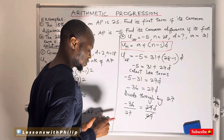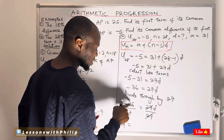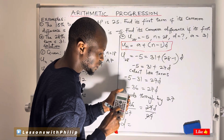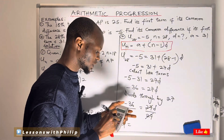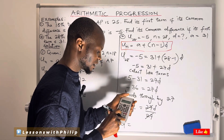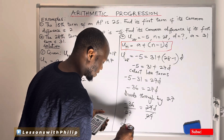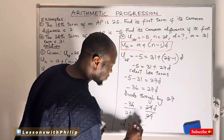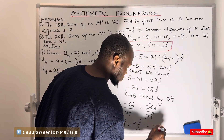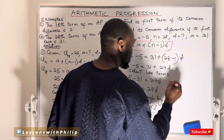The 27s cancel, leaving d alone. My common difference is −36 divided by 27. Simplifying: 3 goes into 36 to give 12, and 3 goes into 27 to give 9. Then 9 goes into 36 to give 4, and 9 goes into 27 to give 3. So −36 over 27 simplifies to −4 over 3, which is the same as minus 1 and one-third.